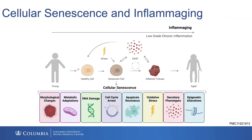When you're young and healthy, you undergo stress, and the stress can cause cells to invoke a number of different cell fates. A damaged or stressed cell could undergo apoptosis — programmed cell death — or some other cell death pathway.